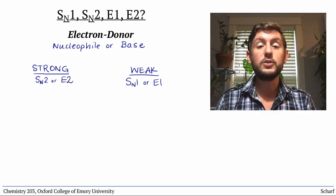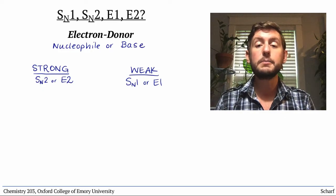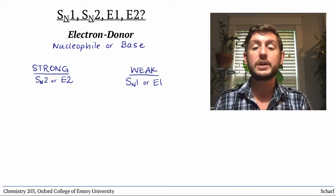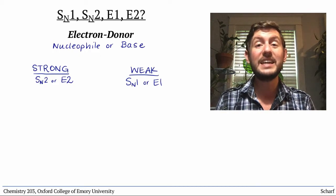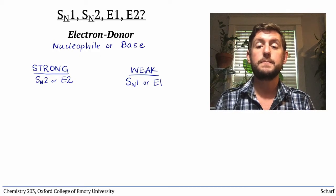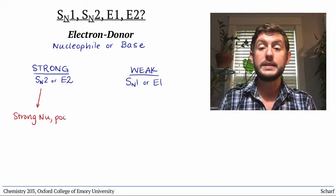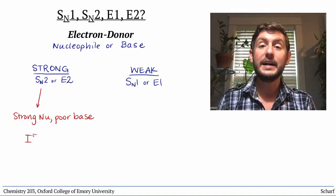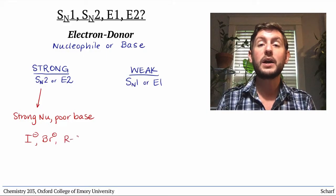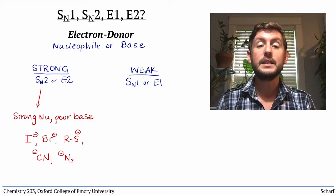Some specific nucleophiles and bases are pretty good at performing a single type of reaction, and they're usually giveaways of their function. Strong nucleophiles that are poor bases include iodide, bromide, thiolates, cyanide, and azide. These favor SN2 reactions.